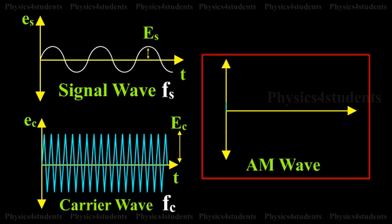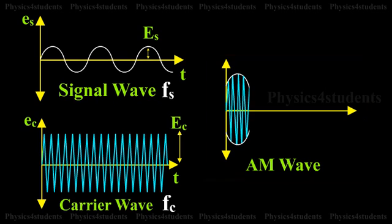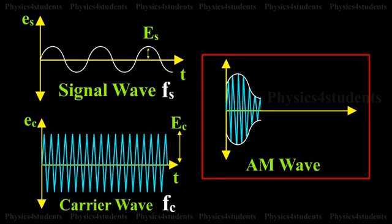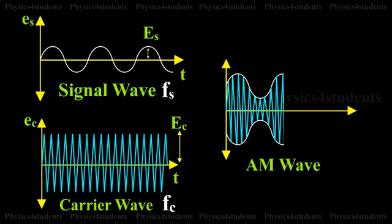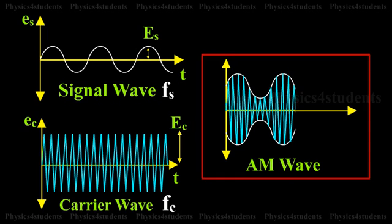The third visual is the amplitude-modulated wave. It is to be noted that the amplitudes of both positive and negative half cycles of the carrier wave are changed in accordance with the signal.